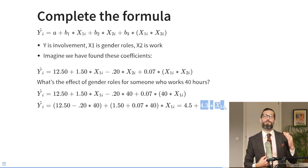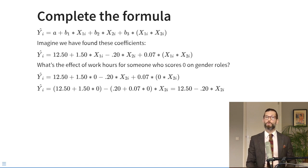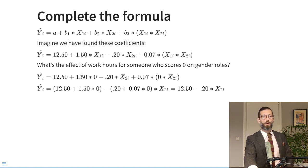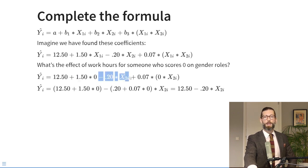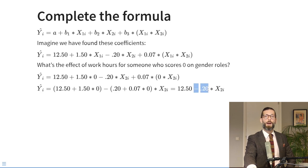Similarly, we might ask what is the effect of work hours for someone who scores 0 on gender roles. We substitute 0 for x1: 12.5 plus 1.5 times 0 is 0, minus 0.2 times x2, plus 0.07 times 0 times x2 goes to 0. So that simplifies to 12.5 minus 0.2 times x2. The effect of work hours for someone who scores 0 on gender roles is minus 0.2.